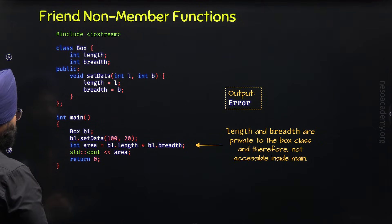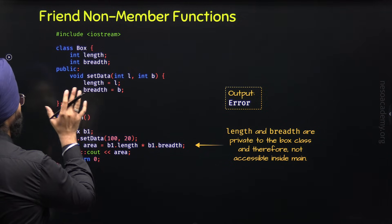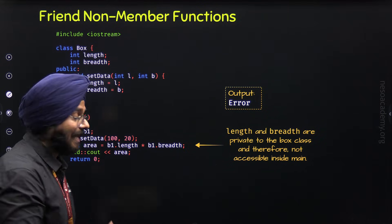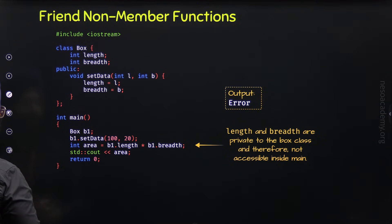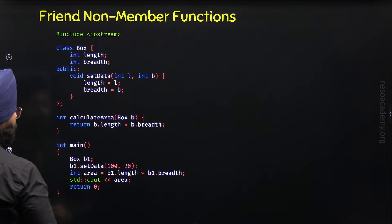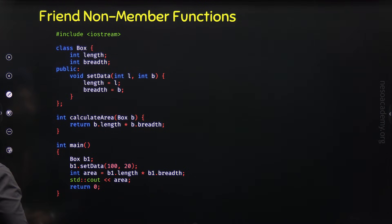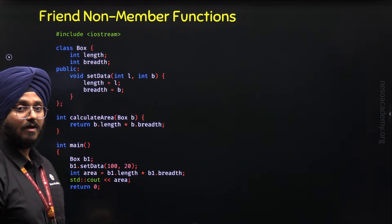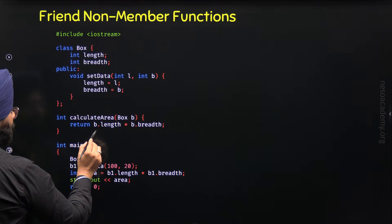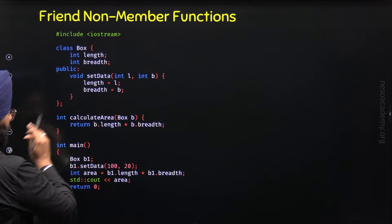So this is the problem. Instead of multiplying length and breadth in main, let's move the multiplication into a non-member function. Let's define a non-member function calculateArea that accepts an object of class box. Through this object, we can access length and breadth, multiply them, and return the result to the caller.